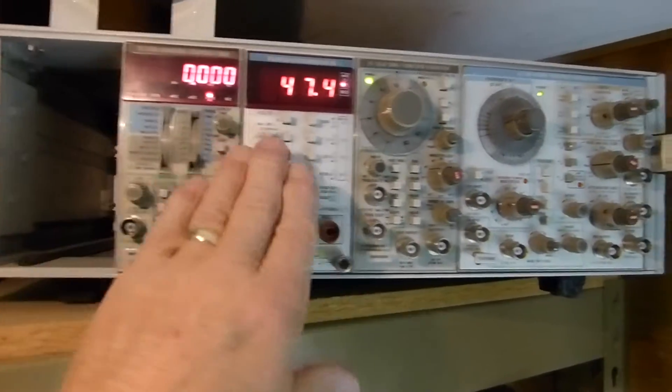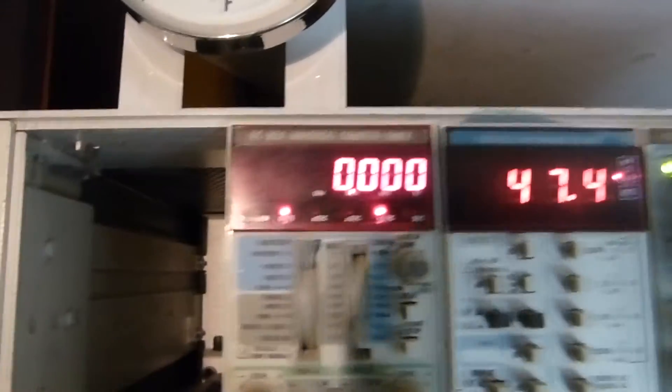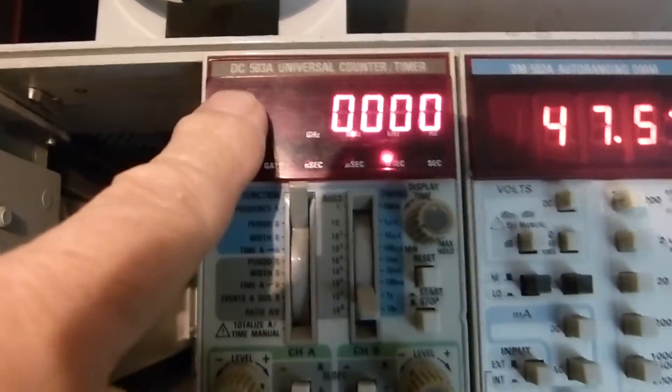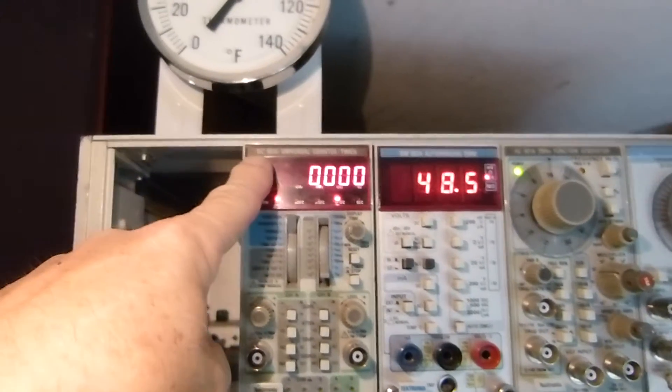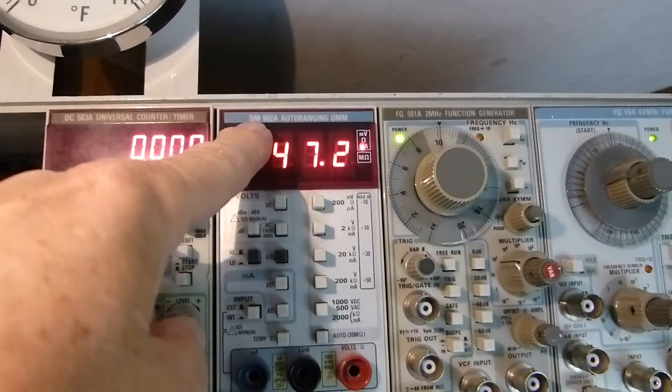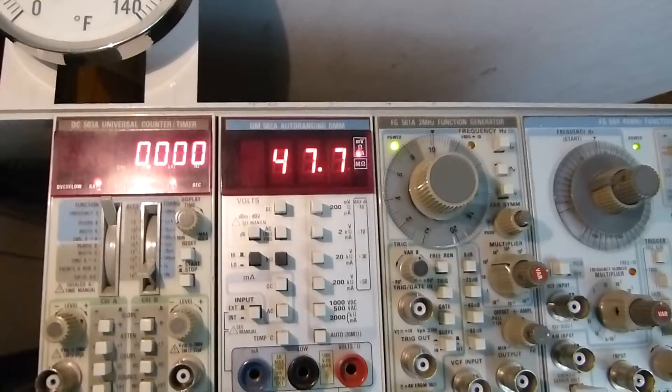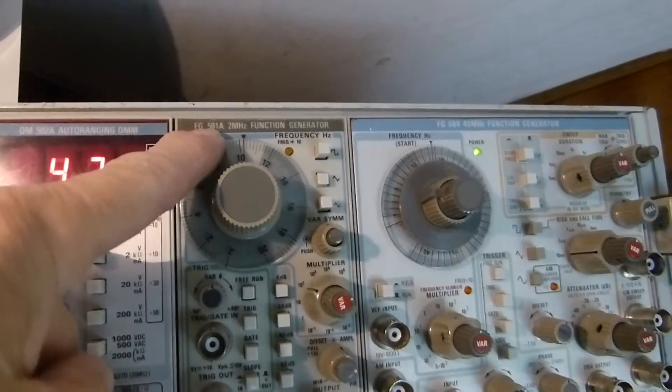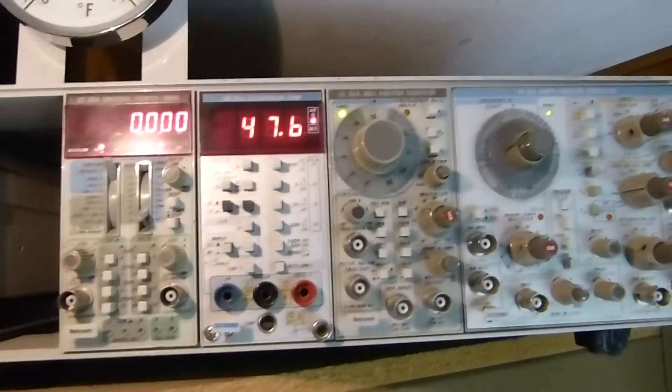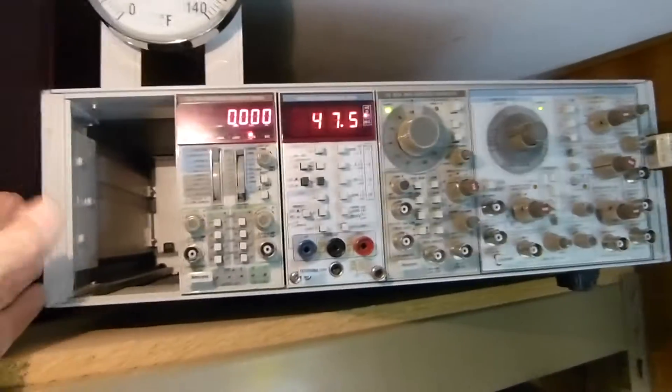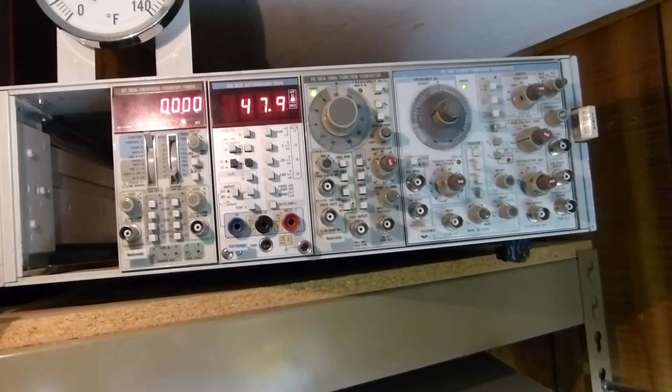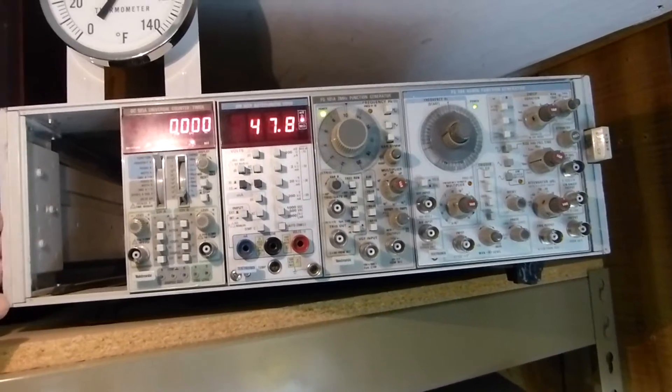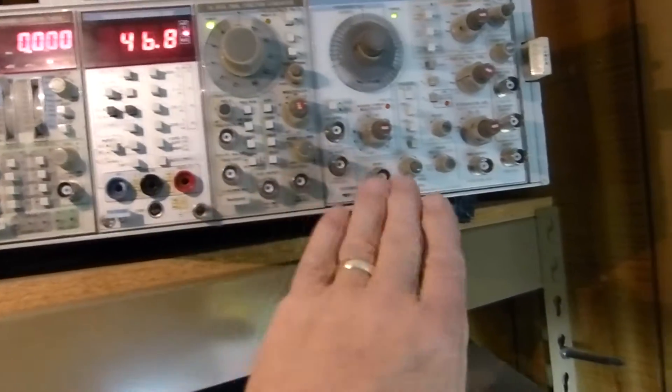All these modules right here are TM 500 series modules. This one is a DC 503A, which stands for digital counter. There's a DM 502A digital meter, an FG 501A function generator, and an FG 504 function generator. All of the 500 series will plug into a TM 500 series module. This happens to be a TM 506 because it has six bays in it.